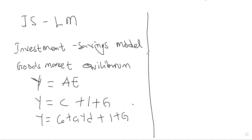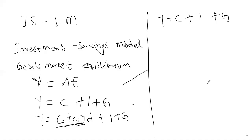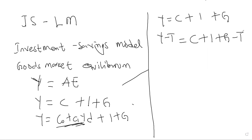In math, anything you do to the left-hand side you have to do the same thing to the right-hand side. We have Y = C + I + G. What we are going to do is subtract taxes from both sides. So when you subtract taxes from both sides, we have Y minus T = C + I + G minus T.